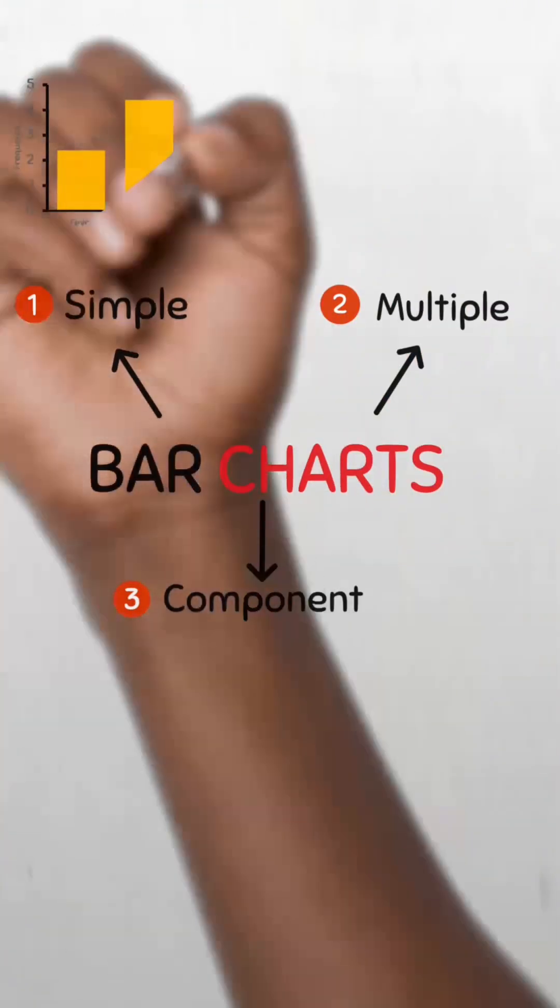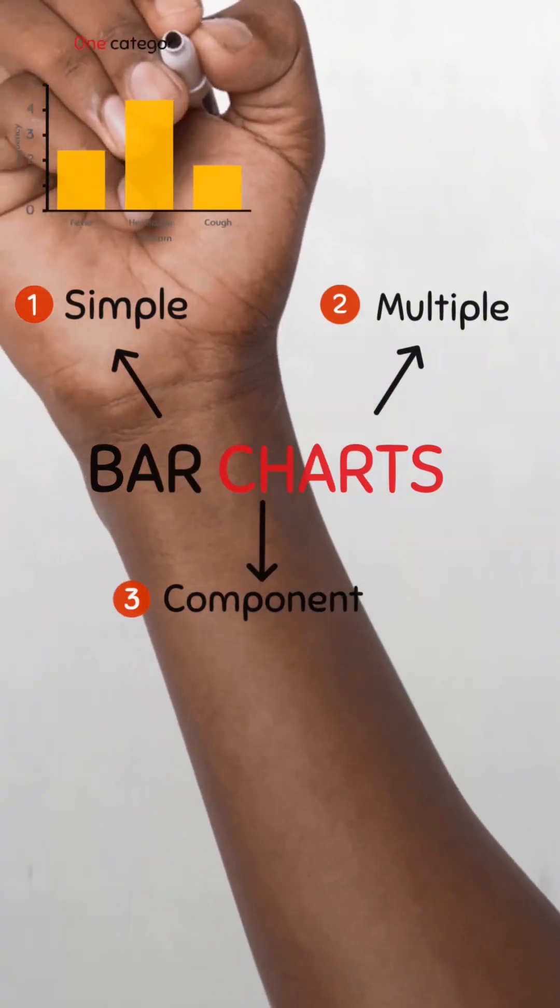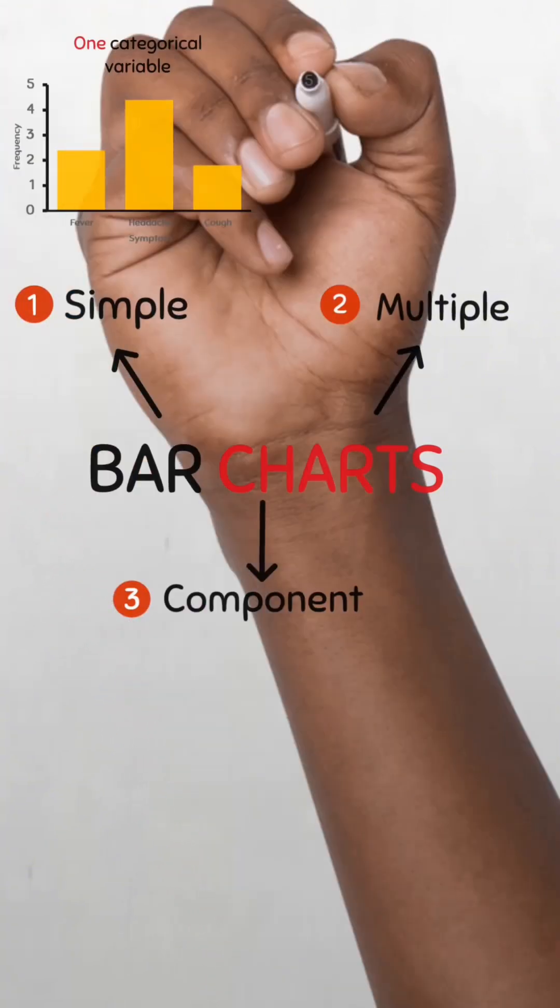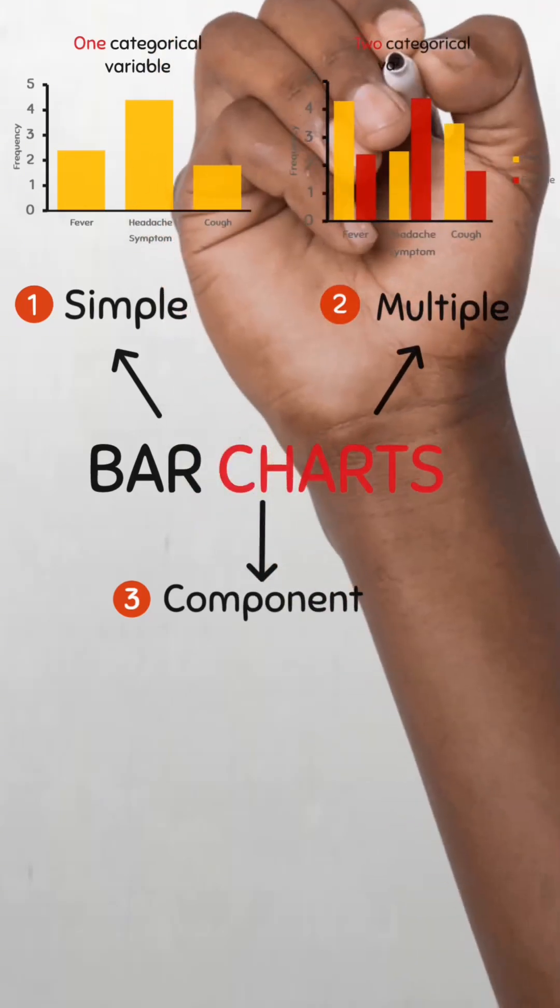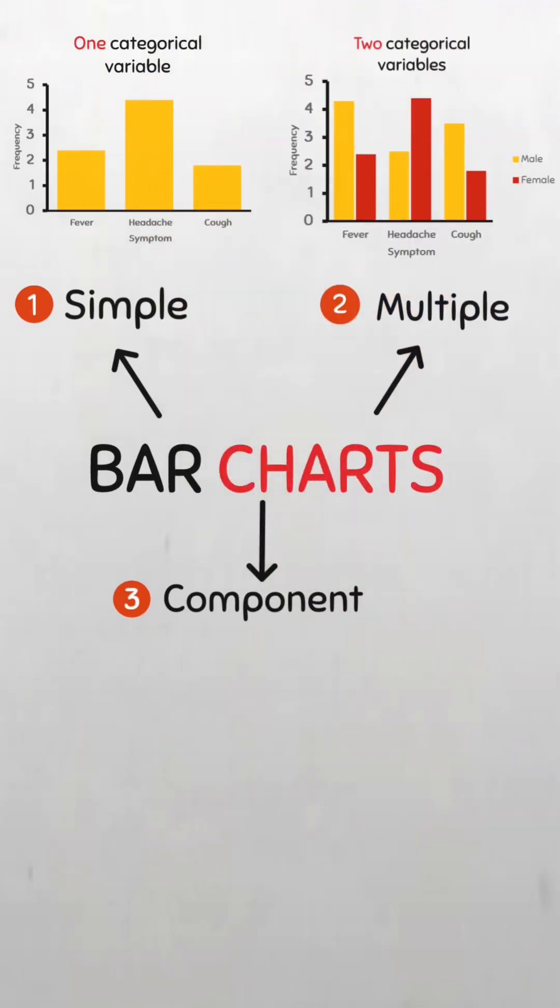In a simple bar chart, the bars represent the whole of the magnitude of a single categorical variable. The multiple bar chart is used for comparing data of two categorical variables and component bar charts.